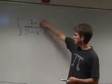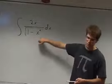We're trying to take the integral of 2x over the square root of 1 minus x to the 4th.